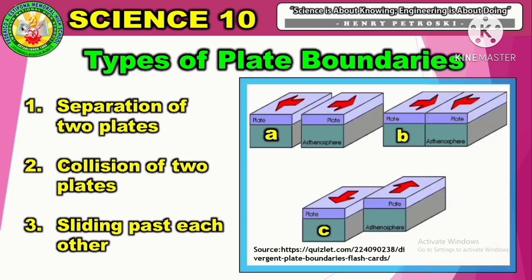Using this figure, which of these shows a separation of two plates and what do you call this plate boundary? Figure A shows the separation of two plates and it is called Divergent Plate Boundary. Next, what plate boundary is shown in figure B and how do you describe this plate movement? Figure B is a Convergent Boundary and it shows the collision of plates.